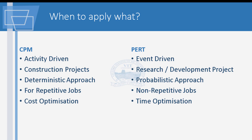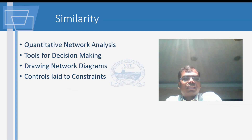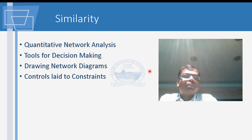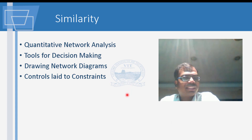These are the key differences between CPM and PERT — showing you when to apply each method. Both are tools for decision making, both require drawing network diagrams, both have the same constraints, and both are quantitative approaches.